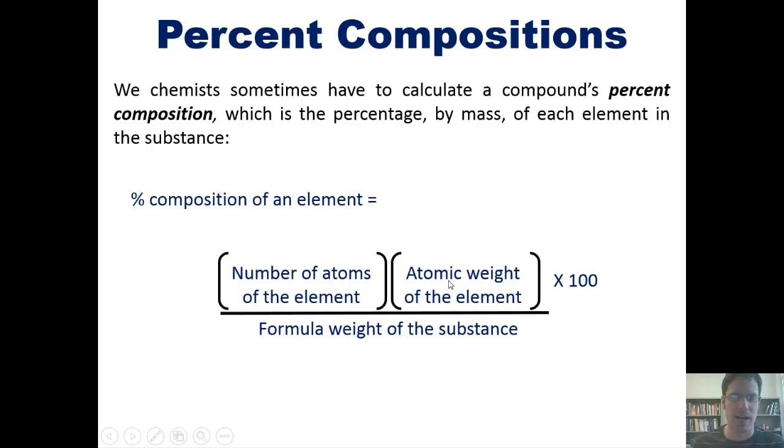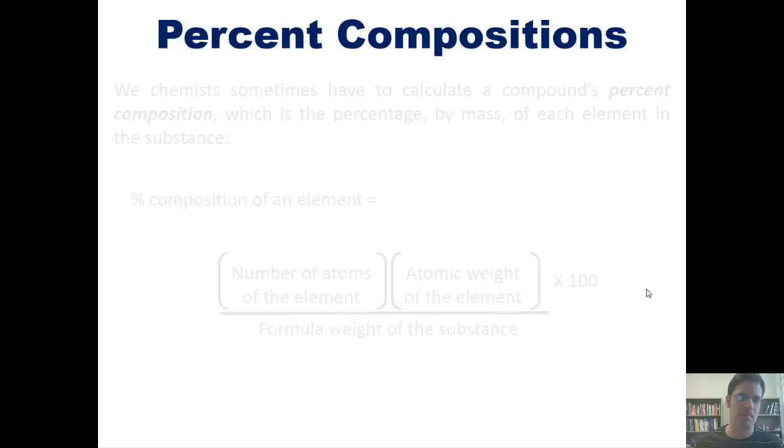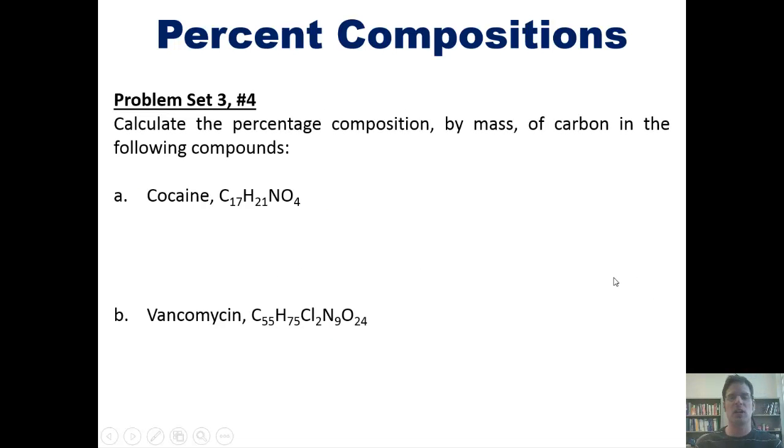I'm sure that's all very straightforward, right? Let's take a look then at a problem. Calculate the percent composition by mass of carbon in each of the following compounds: cocaine and vancomycin. Cocaine is, of course, very horrible, while vancomycin is a very potent antibacterial agent. Now, I'm not going to do this one for you, but we'll invite you to do it on your own. If you wish, you can click a link here to a separate video in which you can see how this kind of problem is undertaken.